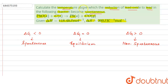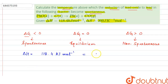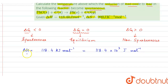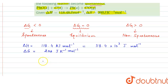We have to calculate the temperature above which the reaction becomes spontaneous — that is, the temperature above which delta G becomes negative. Delta H is equal to 118.4 kJ per mole, so first we convert it into joules: 118.4 × 10³ joules per mole. And delta S is given as 200 joules per Kelvin per mole. We know that delta G equals delta H minus T delta S.